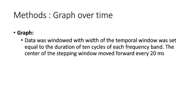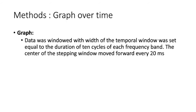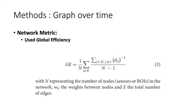The data is windowed as we saw earlier — the time step is 20 milliseconds, and the window width is 10 cycles of each frequency band. Different frequency bands give different window sizes, but since they all move at 20ms steps, the chronnectome length is exactly the same across bands. The network metric used after graph construction is global efficiency, which is used for the brain fingerprinting task.